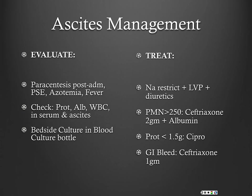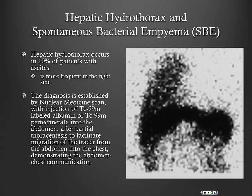If they have SBP, ceftriaxone is our drug of choice with albumin — 1.5 grams/kg on day one, 1 gram/kg on day three. If their protein is less than 1.5 and they don't have SBP, put them on prophylaxis in the hospital. If they're bleeding, give ceftriaxone regardless of whether or not they have SBP.